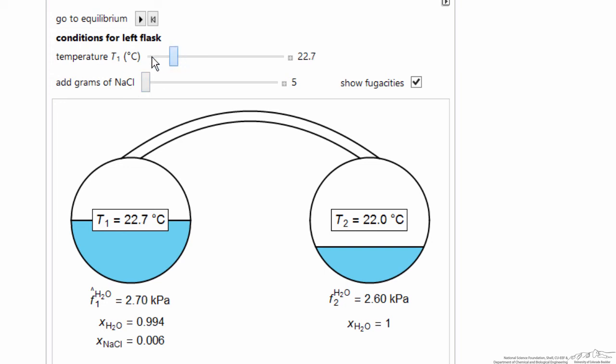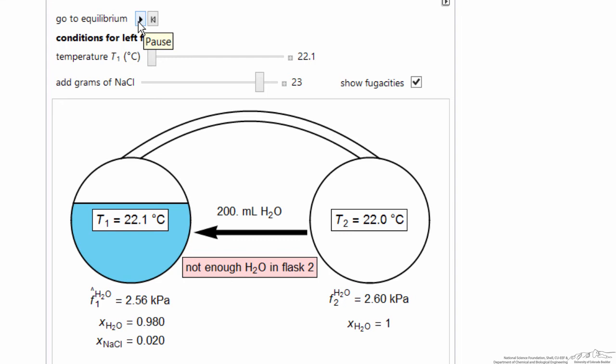It's all a matter of what's the fugacity, and so if I add a lot of salt to the left and use the low temperature, then you see all the water transfers trying to get to equilibrium. Well there's no water here, so there's no fugacity on the left. It was trying to reach equilibrium by decreasing concentration of salt on the left, increasing the fugacity of water.